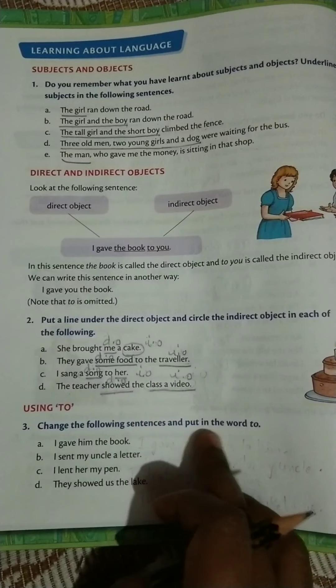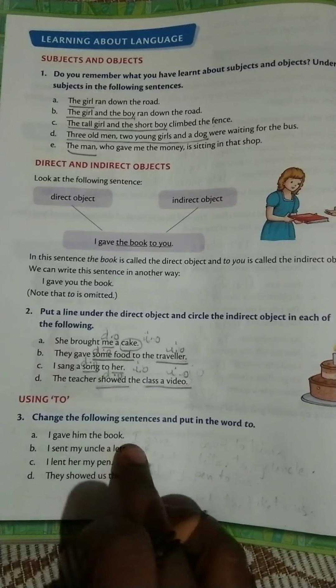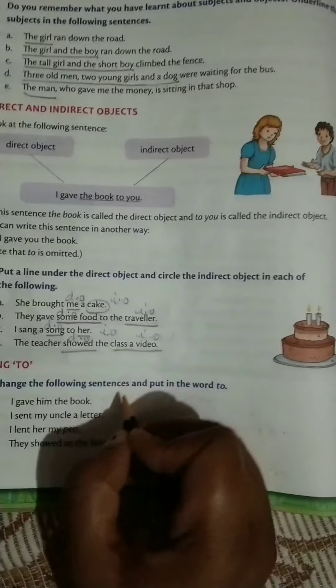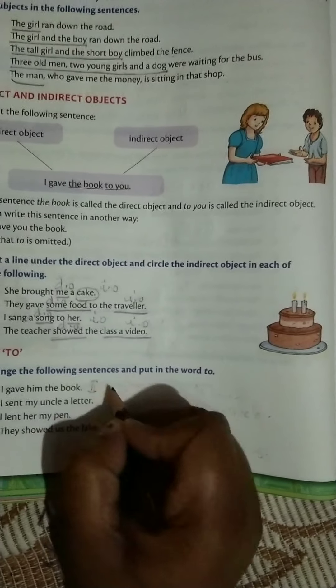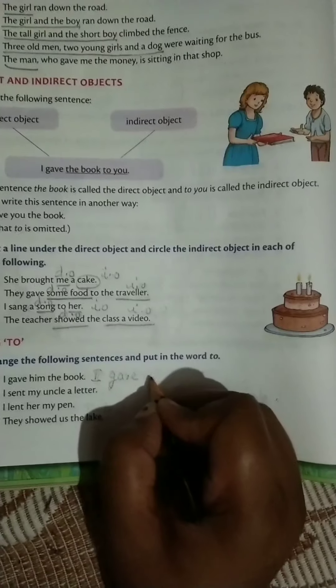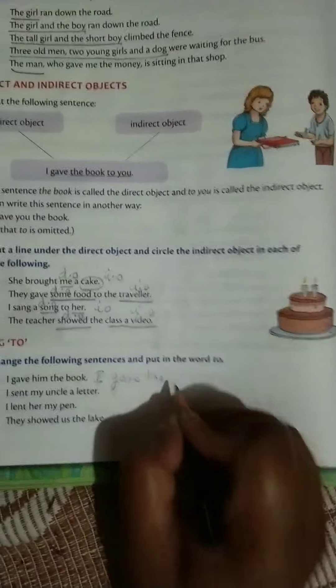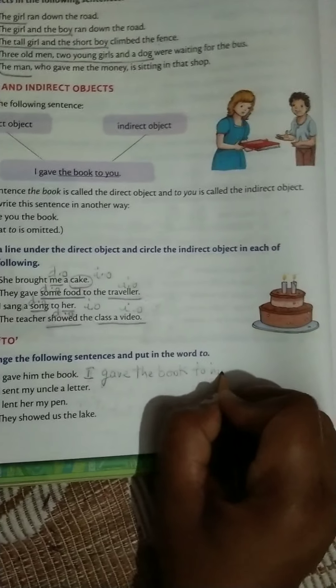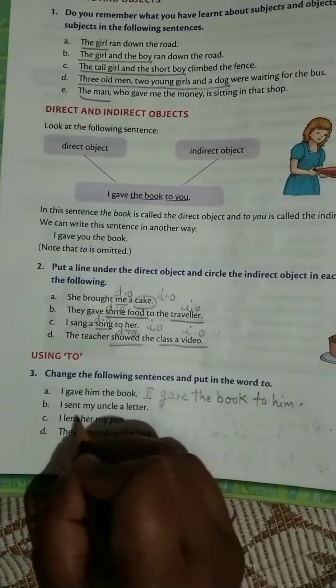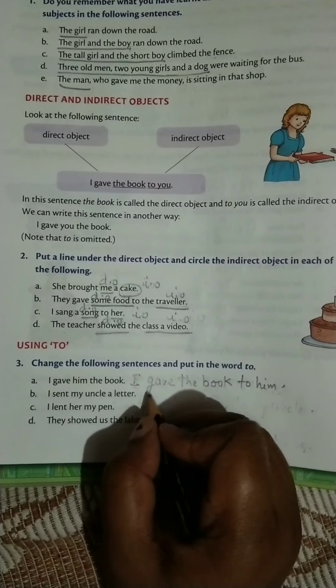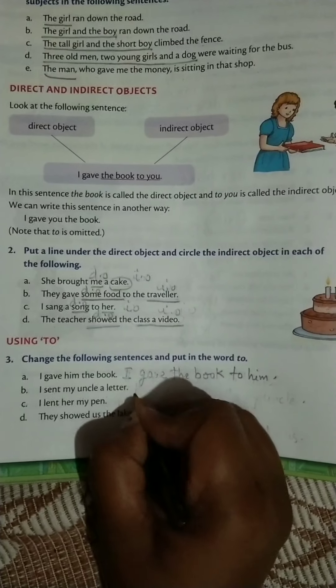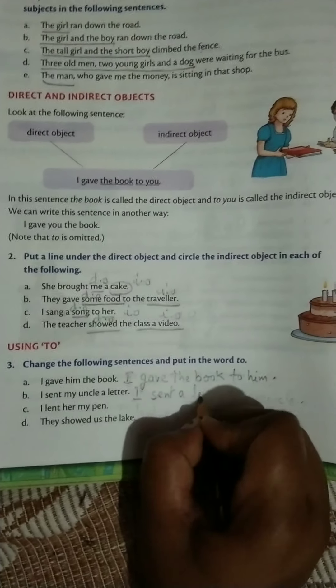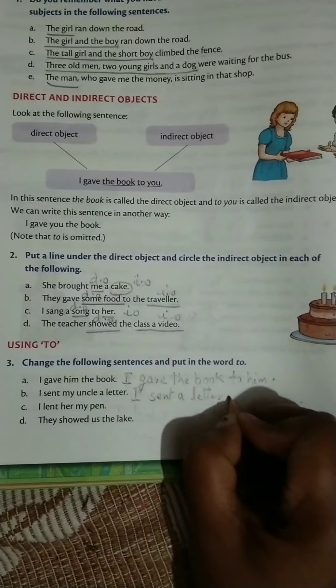Come to the last one. The last is: change the following sentence and put in the word 'to'. I gave him the book. This is given sentence. You have to change it like this: I gave the book to him. I sent my uncle a letter - I sent a letter to my uncle.